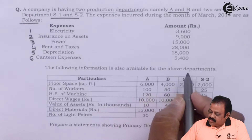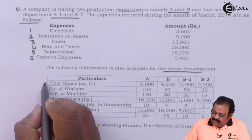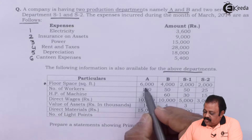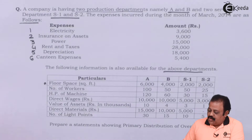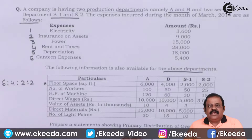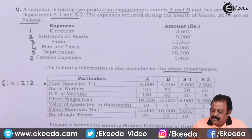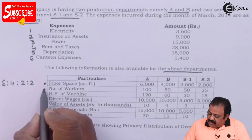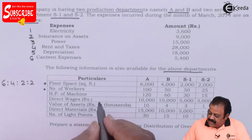The following information is also available for the above departments. Floor space in square feet: 6000, 4000, 2000, and 2000 — giving a ratio of 6:4:2:2. Number of workers: 100, 50, 50, and 25 — giving a ratio of 4:2:2:1.